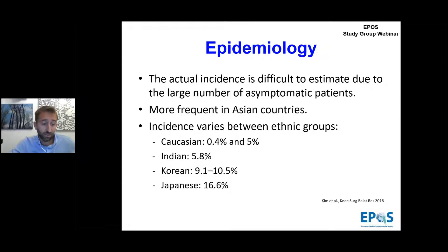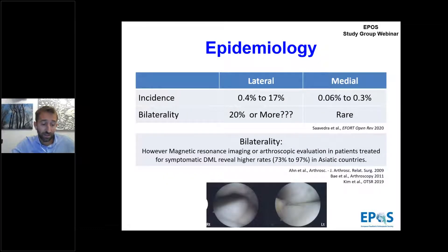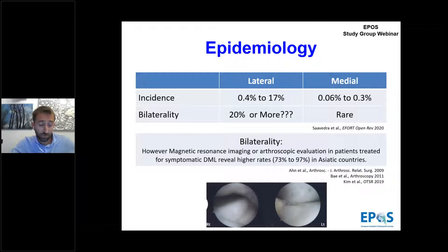There are different incidences according to international characteristics. Higher incidences are reported in Asian countries, with 14 to 17% in Japan. Discoid meniscus is commonly lateral; medial discoid meniscus is very rare and less described. Historically, studies report bilateral discoid meniscus in 5 to 20% of patients. However, recent studies with MRI or arthroscopic evaluation of the contralateral knee in symptomatic patients reveal higher rates ranging between 73 and 97% in Asian countries.